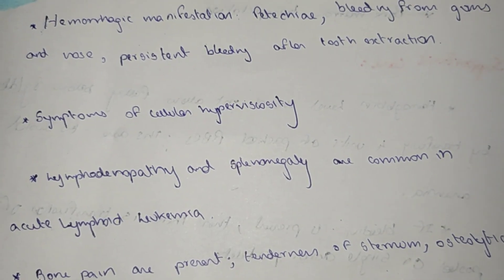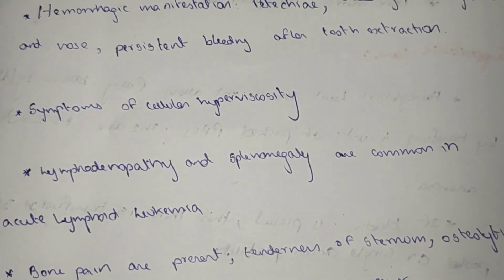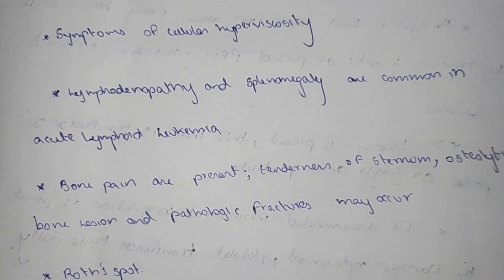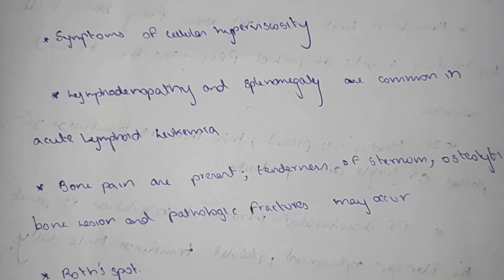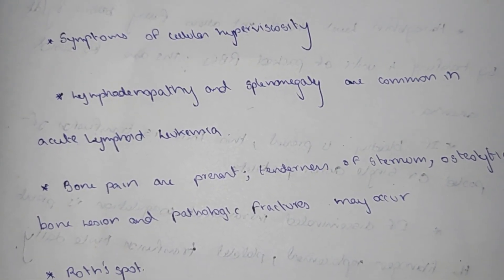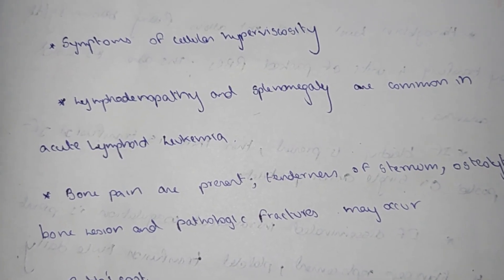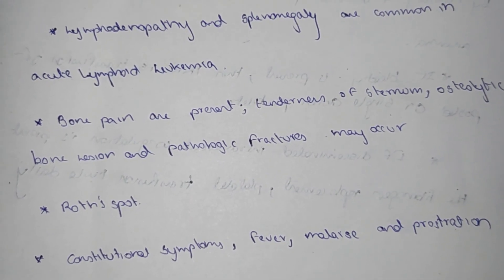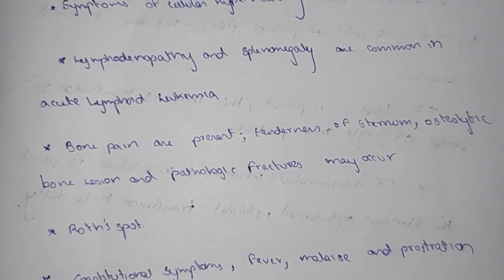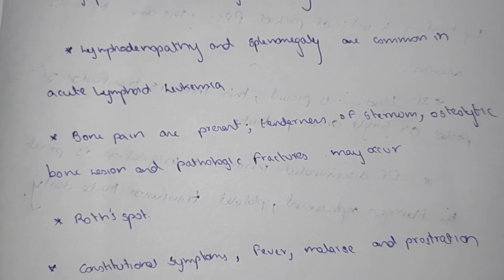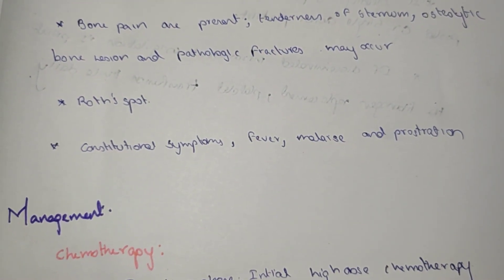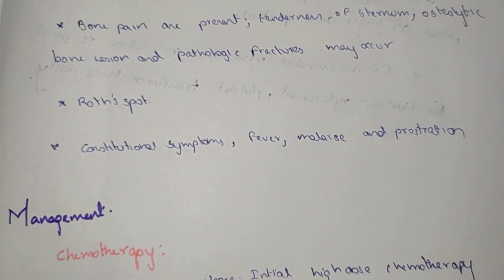Other symptoms include cellular hyperviscosity. Acute leukemia also shows common features of lymphadenopathy and splenomegaly. Bone pain with tenderness of the sternum, osteolytic bone lesions, and pathological fractures may occur. Roth spots and constitutional symptoms such as fever, malaise, and prostration are also seen.